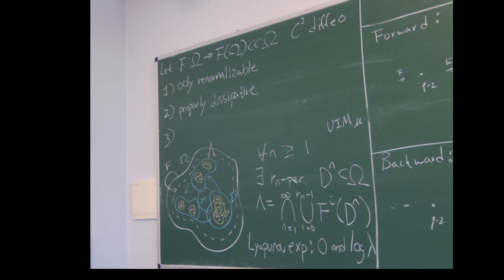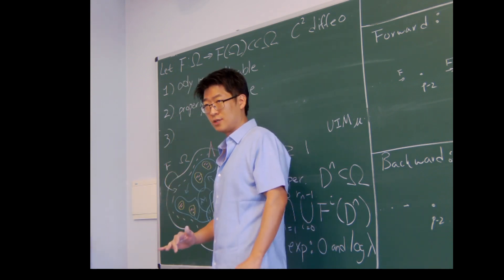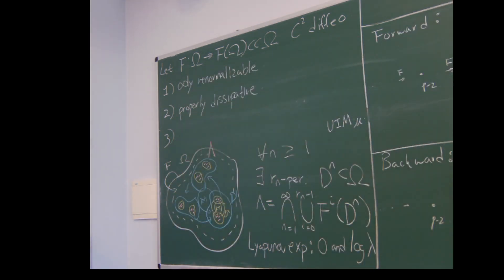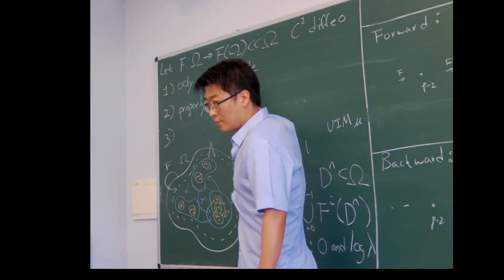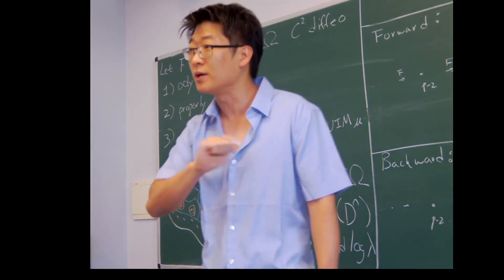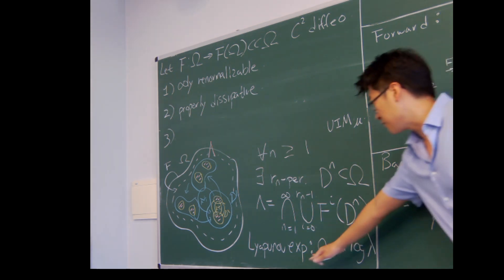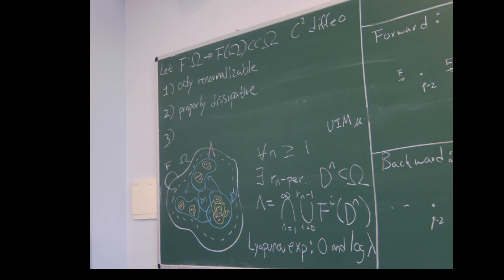The second assumption is that the map is not only dissipative but properly dissipative — I didn't define this last time, so let me define it now. Actually, if you have infinitely normalizable and properly dissipative, then you can prove — it's not trivial but it's elementary-ish — that it has to be uniquely ergodic and that one of the Lyapunov exponents has to be zero. It's one of the first things you have to prove before doing any serious work.